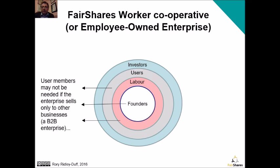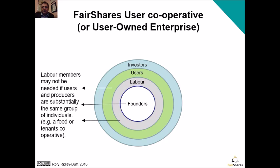There can be a case for worker cooperatives and employee-owned enterprises. For example, if you've constituted a business that only supplies other businesses, it might make sense not to have user members or user shareholders. Similarly, if you're a user cooperative and your labour force are all users as well, it doesn't necessarily make sense to have both labour and user members — such as in a food co-op where you grow the food and you eat it, or a tenants co-op where you look after your properties as well as live in them.